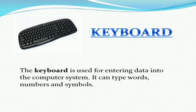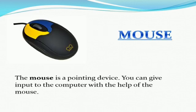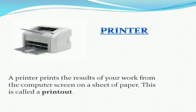Next is the mouse. The mouse is a pointing device. You can give input to the computer with the help of the mouse, and it is also used for pointing or selecting the files which we want to select. Next is the printer — a printer prints the result of your work from the computer screen on a sheet of paper, which is called a printout.